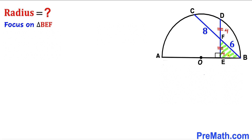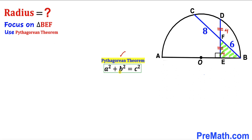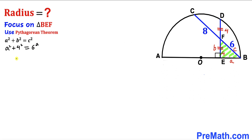Now let's focus on right triangle BEF and use the Pythagorean theorem: A squared plus B squared equals C squared. The longest leg is side c. Let me call the other sides lowercase a and lowercase b. Filling in the values: a squared plus b — in our case 4 — becomes 4 squared, and c is 6, so this becomes 6 squared.